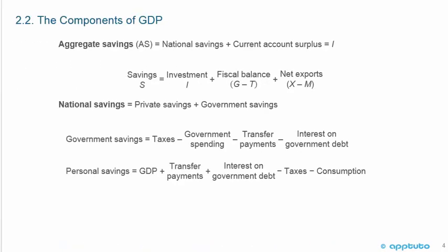Aggregate savings equals national savings plus the current account surplus, which equals I. So savings equals investment I plus the fiscal balance (G minus T) plus net exports (X minus M).